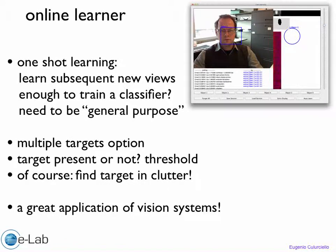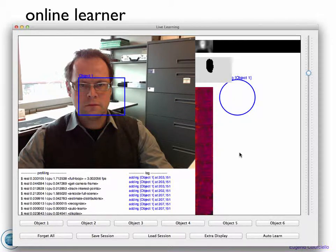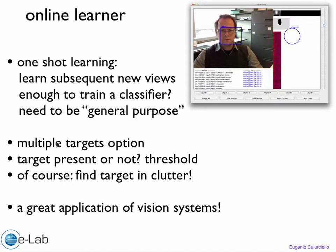The current online learner has a multiple prototype option, so you can click on multiple object kinds and save the prototypes. You will have different convolutional networks, and the last layer would be tailored to that specific view. The system has to be able to tell you if a target is present or not, and it has to find the target in clutter even with the background. It's really a great application of a vision system and an awesome example of what you can do with deep networks.